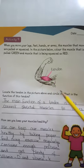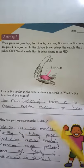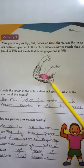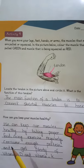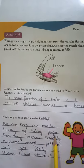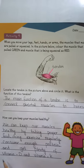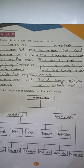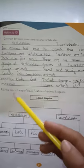The second question is to locate the tendon in the picture and circle it. The main function of the tendon is to connect skeletal muscle to bones. How can you keep your muscles healthy? We can keep muscles healthy by taking proper food, doing exercise regularly, consuming enough protein, and getting a variety of vitamin D and vitamin K.